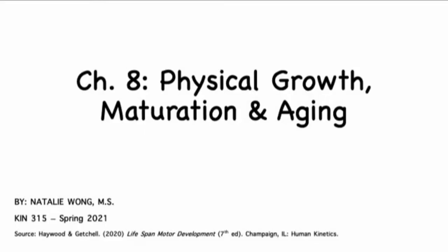This week we are covering Chapter 8 in the textbook. This chapter is going to cover physical growth, maturation, and aging. These are three terms we said were related to the topic of motor development but weren't quite synonymous with it. People often use growth, maturation, and aging in place of development, but development is a continuous process, whereas each of these typically happens at a specific time point within the lifespan.